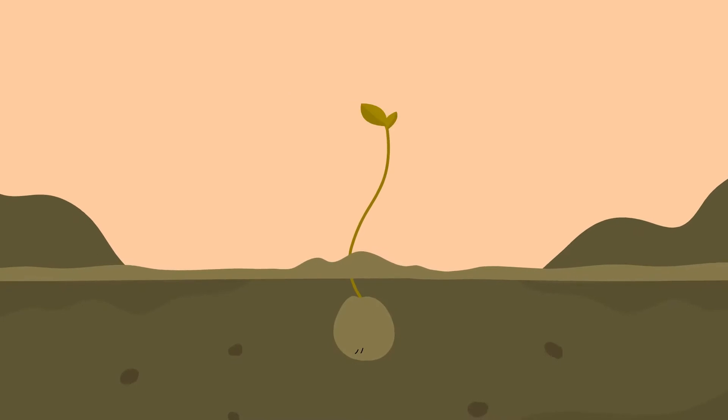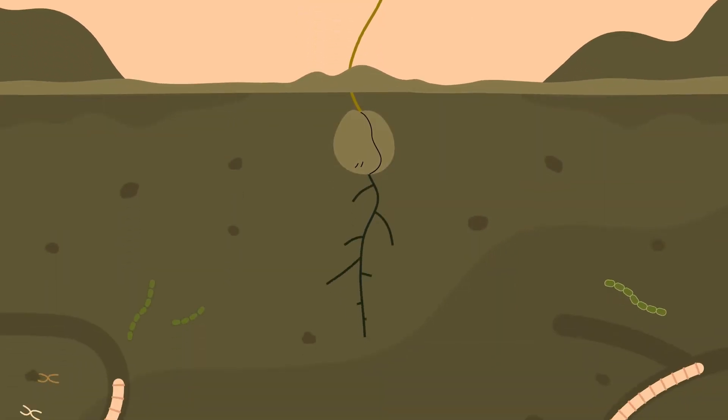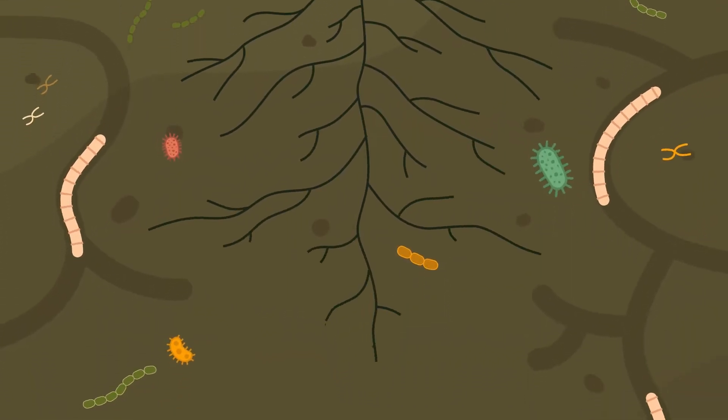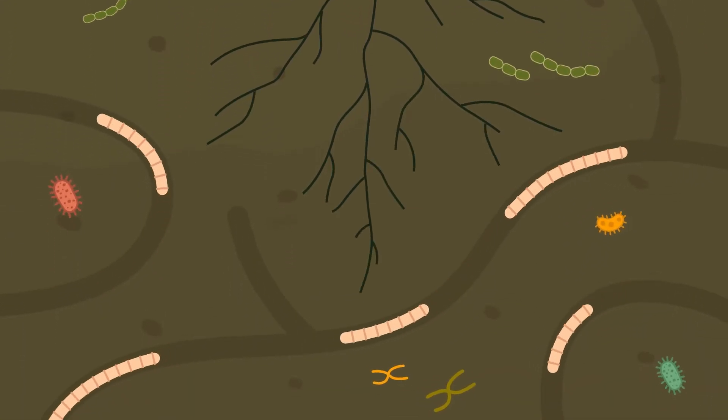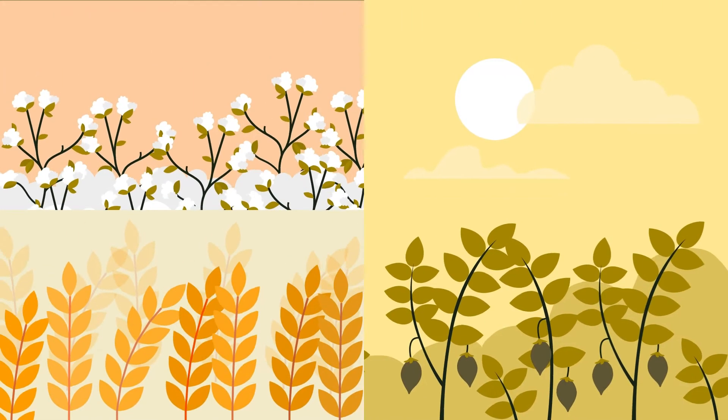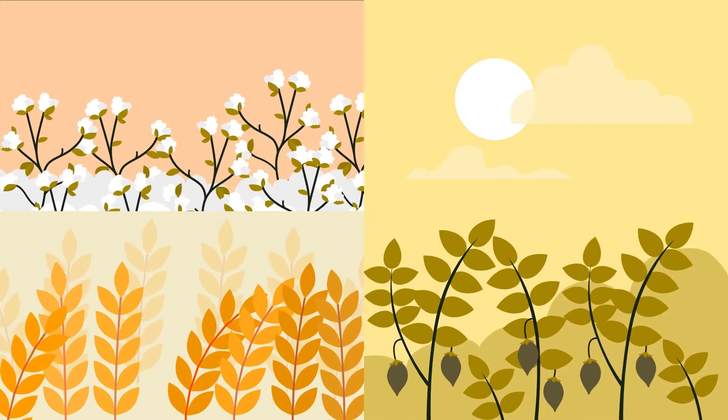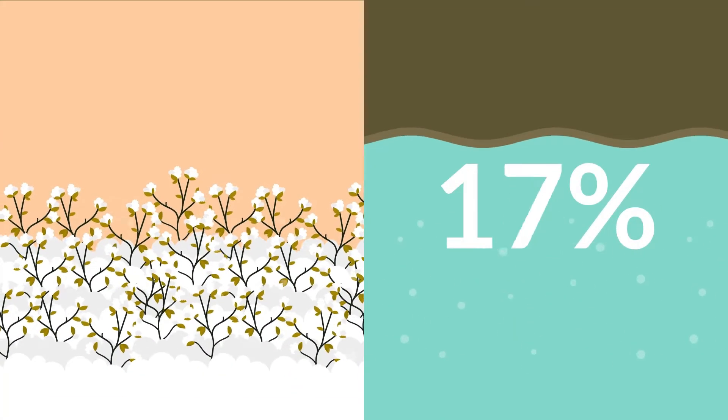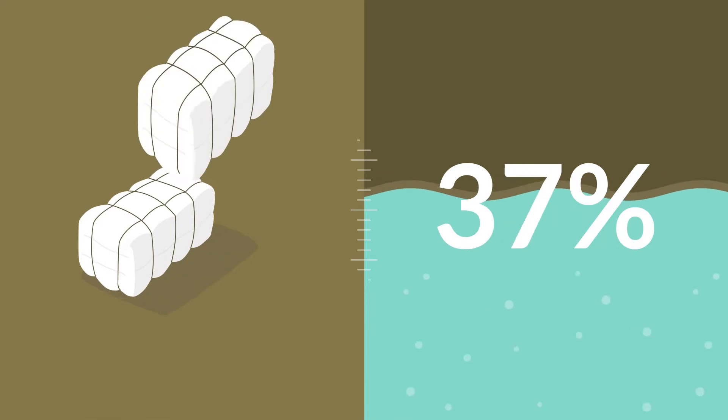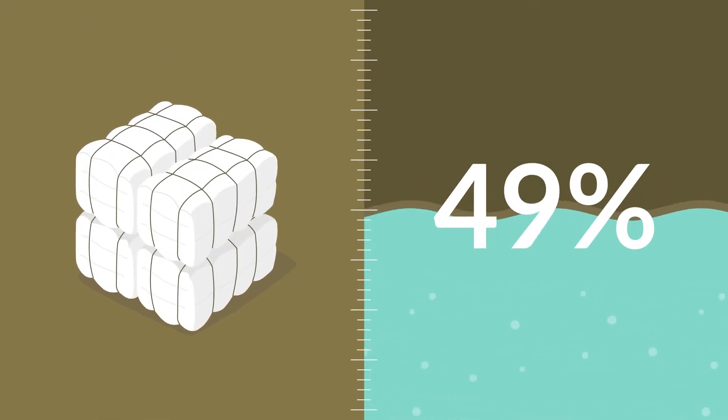It all starts in the soil, where we encourage bacteria, microbes and worms to help keep our soils fertile. Combine this with low and no-till farming, crop rotations and huge advances in water efficiency, growing a bale of cotton now takes only half as much water as it used to.